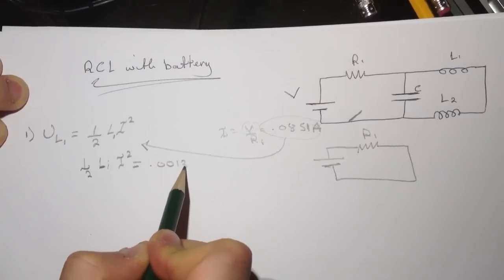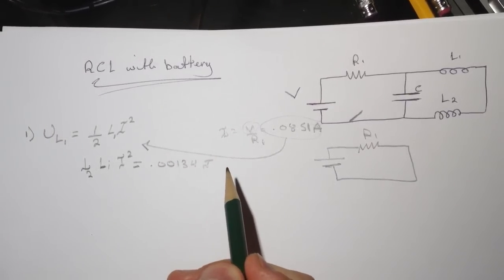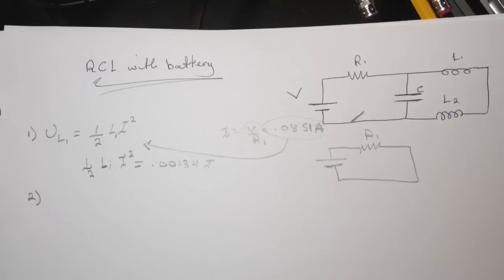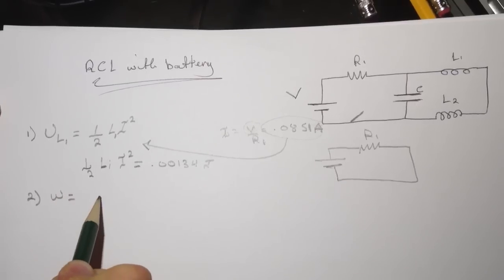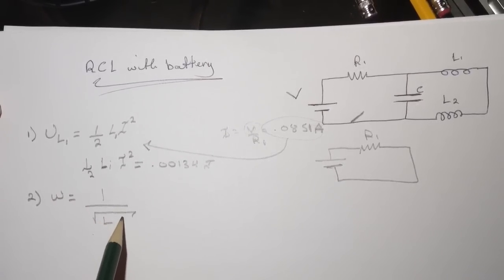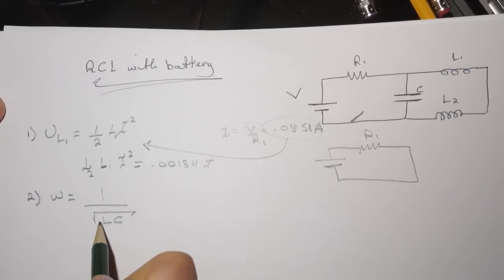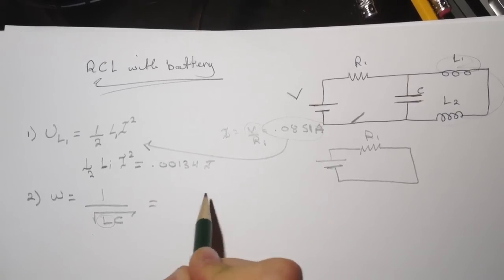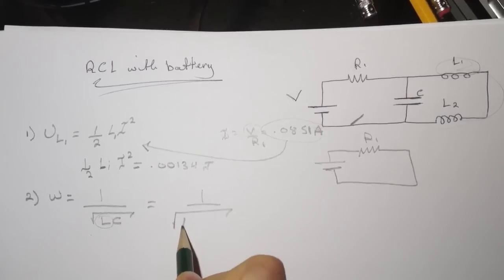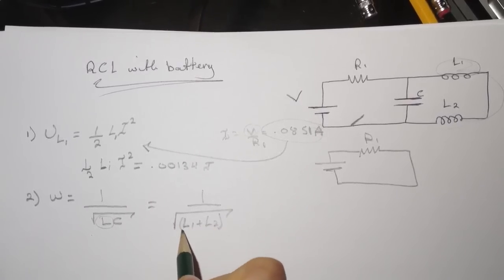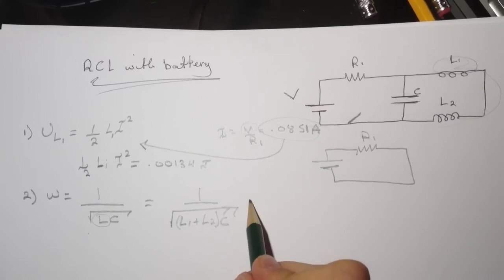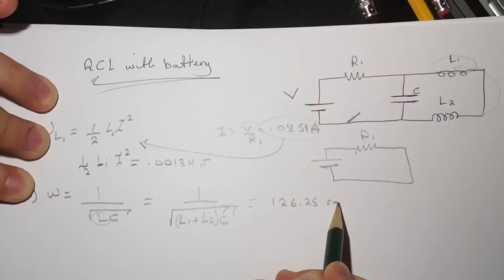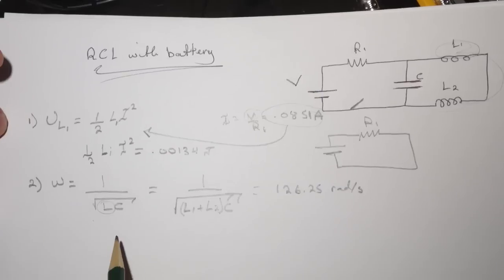Question number two is asking about what is the omega. Omega is equal to one over square root of LC. Since the inductors are in series, we're going to add them like the resistor. So this will be equal to one over square root of L1 plus L2, all times C, all of them under the square root. I got this value to be 126.25 rad per second.